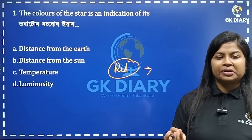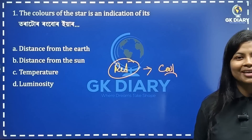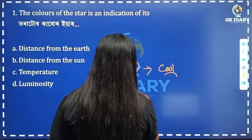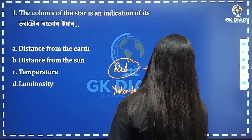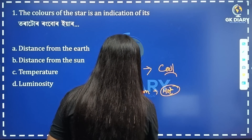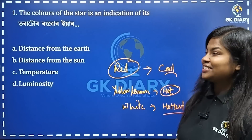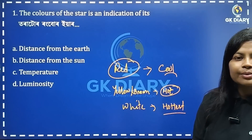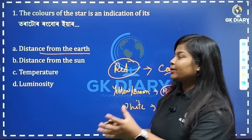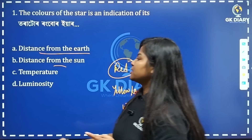We have a very light temperature. The color is pretty light, so it's a yellow color. A very dark color means high temperature — warm. You can see: white is the hottest. So you can see the temperature scale. The options are: distance from the Earth — not correct; distance from the sun — not correct; temperature — yes, correct. Option C is correct.